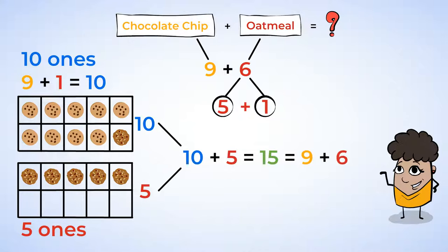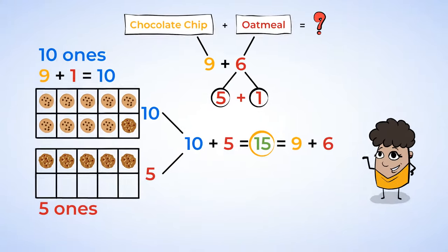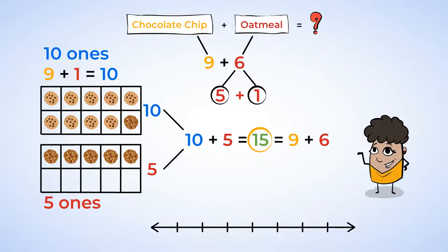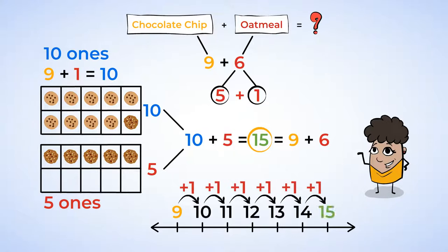So yes, 9 plus 6 is just like 10 plus 5. In both cases, you have the sum of 15. You can prove this by using a number line, starting at 9 and adding 6 more. Here's 15, the answer you've just had.